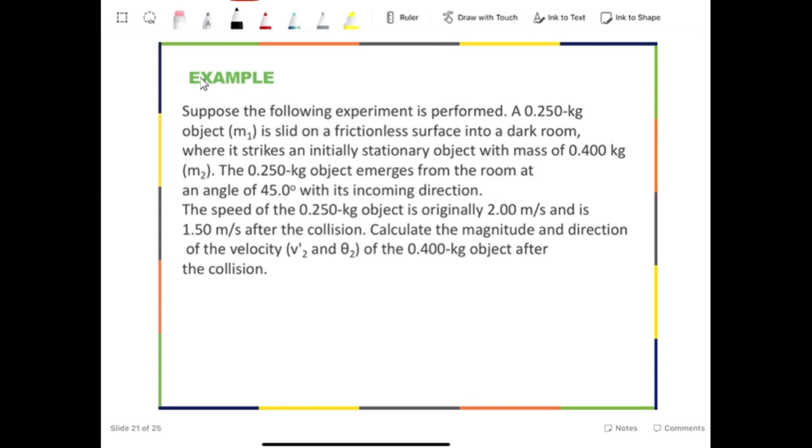Calculate the magnitude and direction of the velocity, which is v2' and θ2, of the 0.400 kg object after the collision.